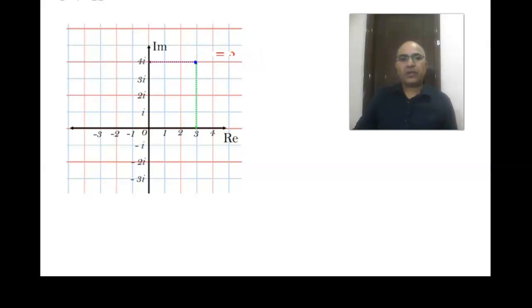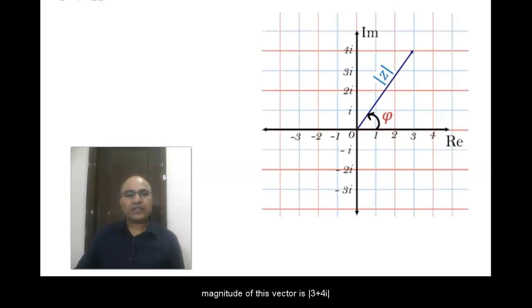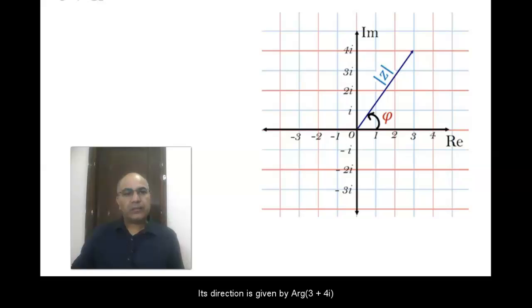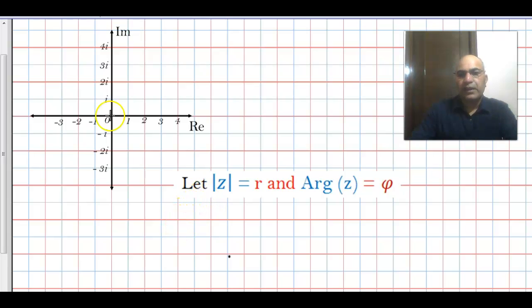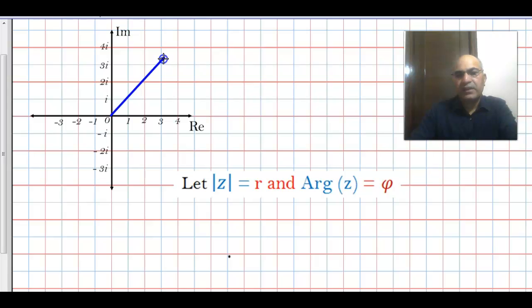There is another way of representing a complex number. We can represent it by a vector whose magnitude is |Z| and whose direction is given by the argument of Z. The argument of Z is the angle which the vector makes with the positive direction of the X-axis in the anticlockwise sense. Let |Z| = R and argument of Z = φ. Then the vector representing Z is of length R and makes an angle φ with the positive X-axis in the anticlockwise sense.